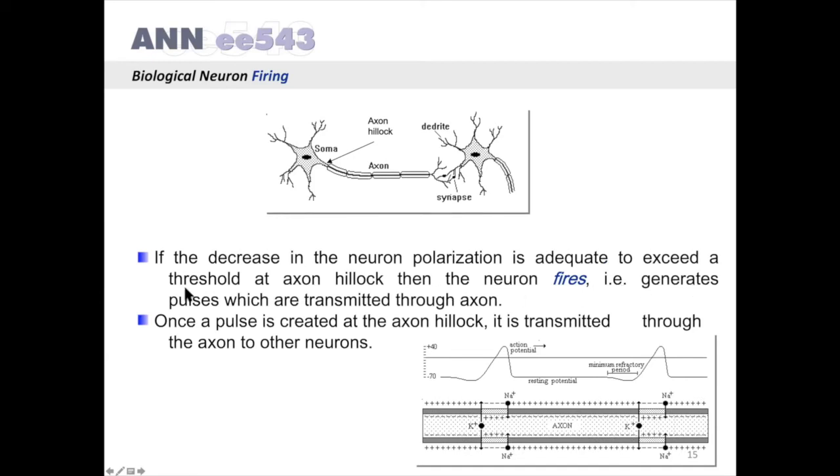That is, it generates pulses which are transmitted through axon. Once a pulse is created at axon hillock, it is transmitted through the axon to other neurons.